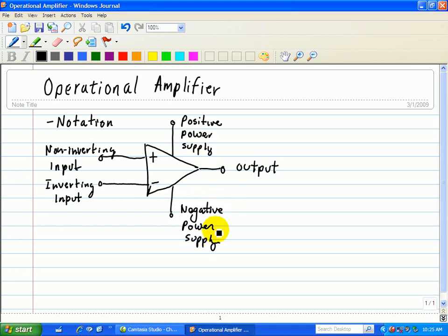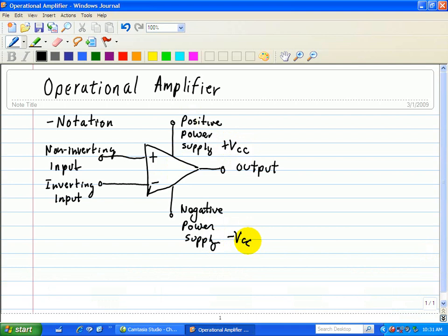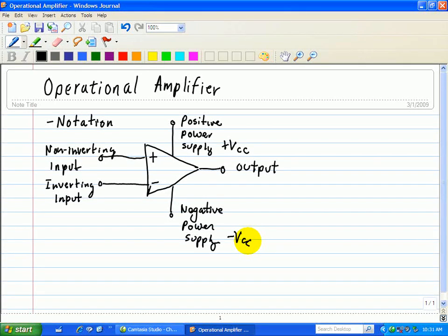Since the op-amp is an active device, it requires power to make it work. However, when we draw these circuits, the positive power supply is usually denoted as plus VCC, and the negative power supply is usually denoted as negative VCC.